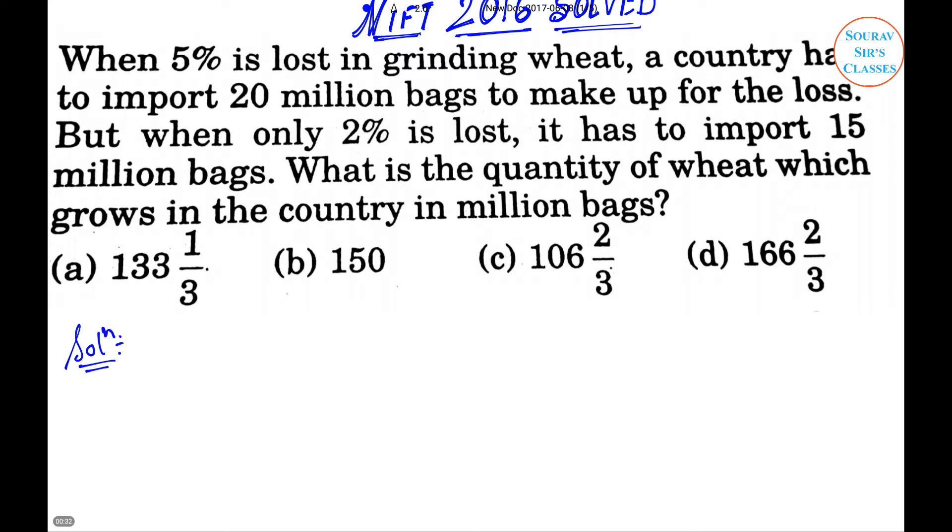Solution: Let x million bags be the required quantity of wheat. So according to the question, we write 95% of x plus 20 equals 98% of x plus 15. That implies 3% of x equals 5.